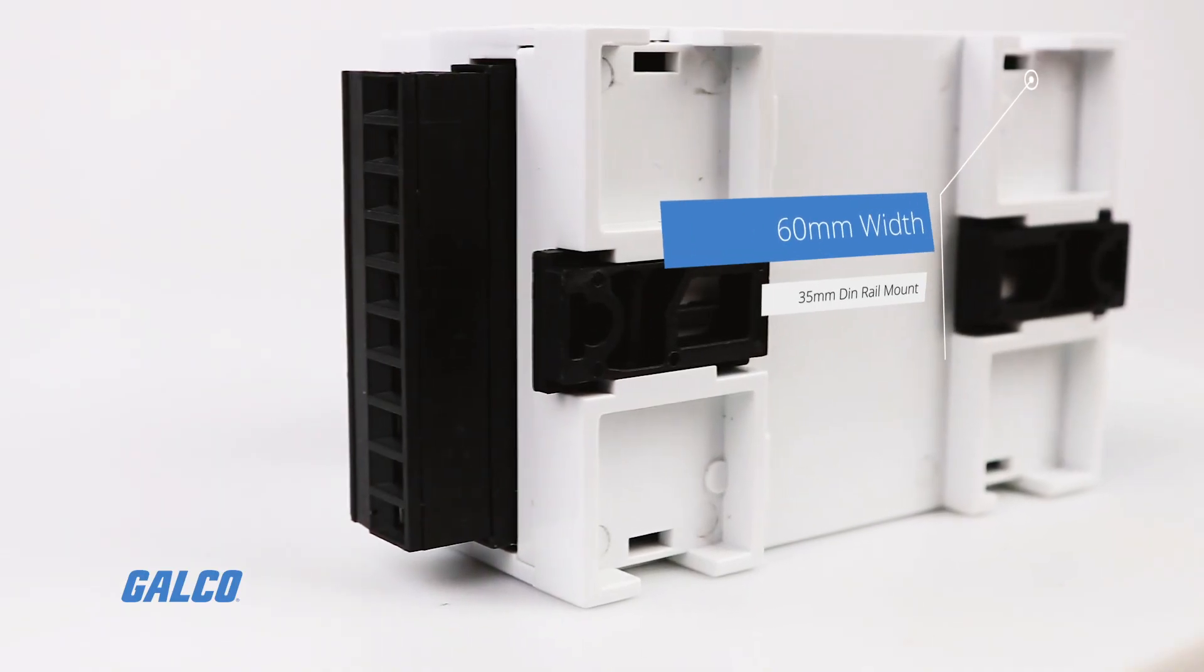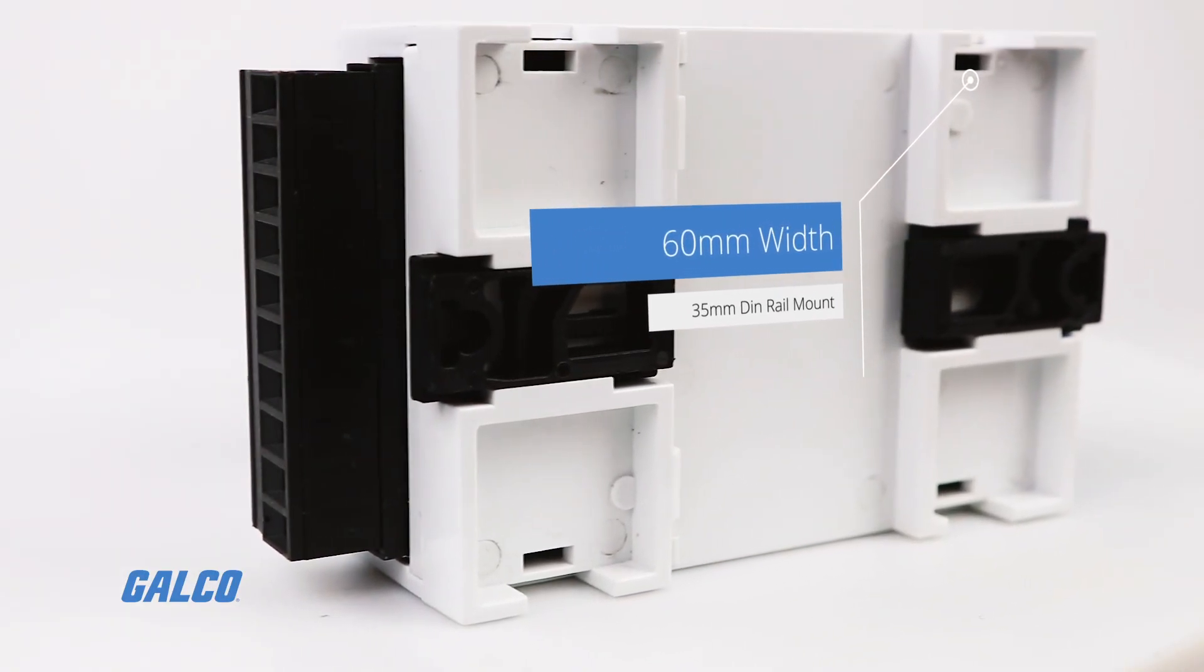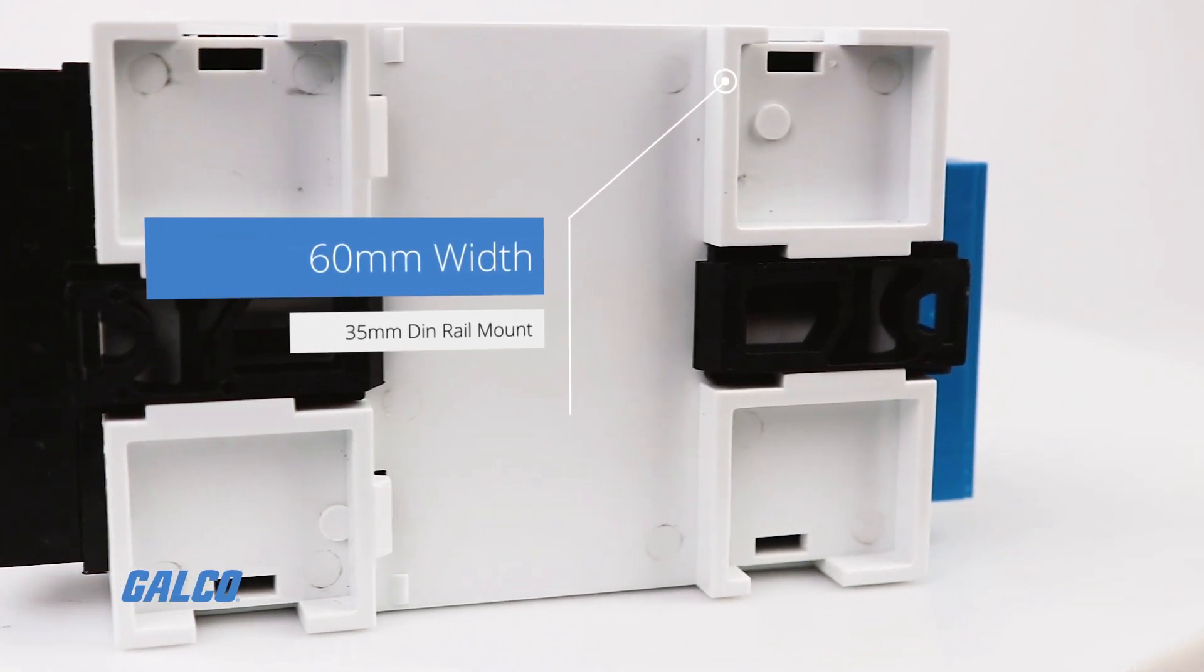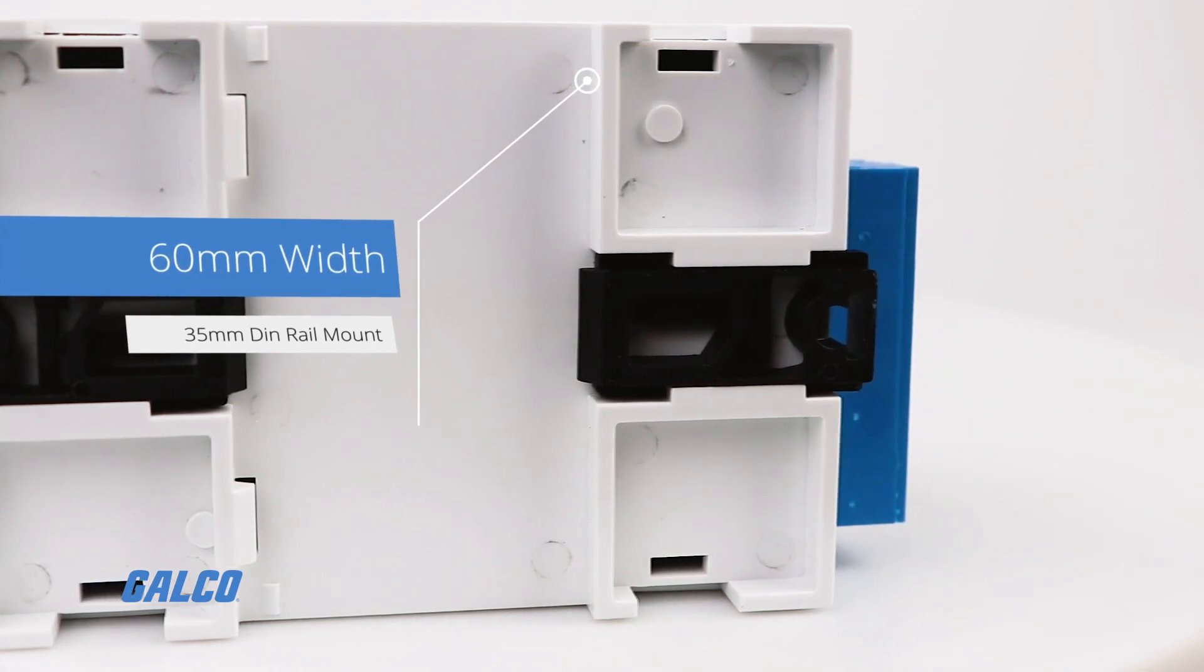This series utilizes a compact 60 millimeter wide enclosure that can be mounted on a 35 millimeter DIN rail or panel mounted with two screws.